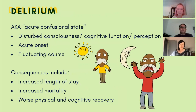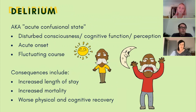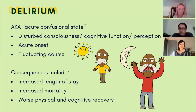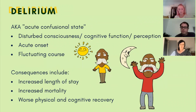We've mentioned delirium a couple of times — but what does it mean? It's another term for acute confusional state. The NICE guideline definition gives three key characteristics. First, a disturbance of conscious level, cognitive function, or perception. Second, it must have an acute onset. Third, it must have a fluctuating course. For example, people may change between being hyperactive — one type of delirium — and hypoactive, another type. They may be better or worse at different times of the day.